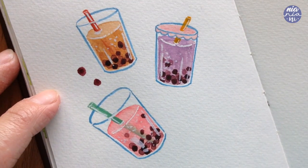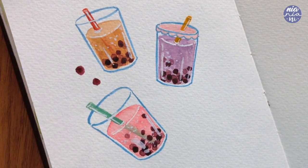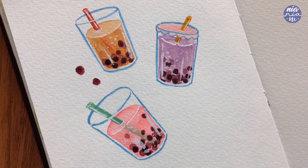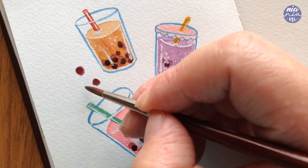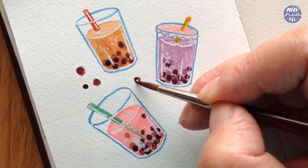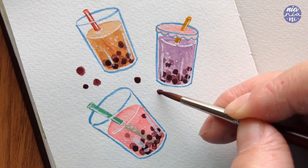But I wanted to add a bit of accent since I'm only painting three of them. And for that, I'm going to add some bobas around the composition. And I'm going to paint this by also varying the size and also the consistency and placement of them.